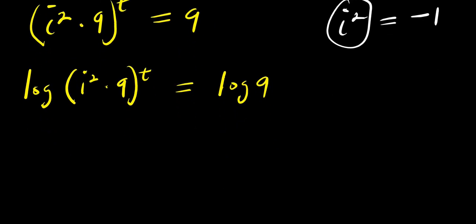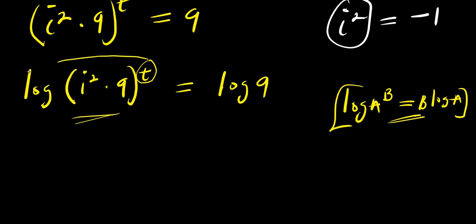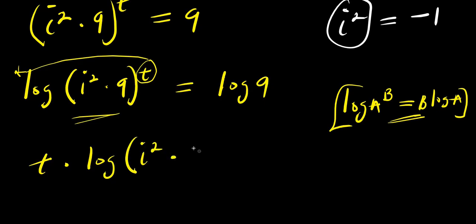Now, using the logarithm power property — if you have log of a to the power of b, this equals b times log a — we apply this here. The t at the exponent comes in front of the log, so we have t times log of i squared times 9, and this equals log 9.